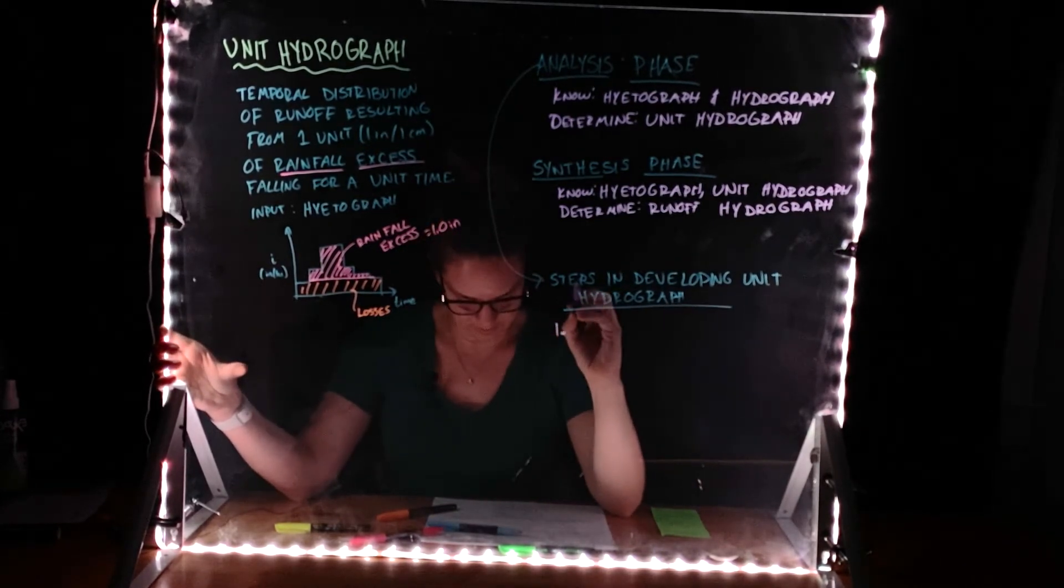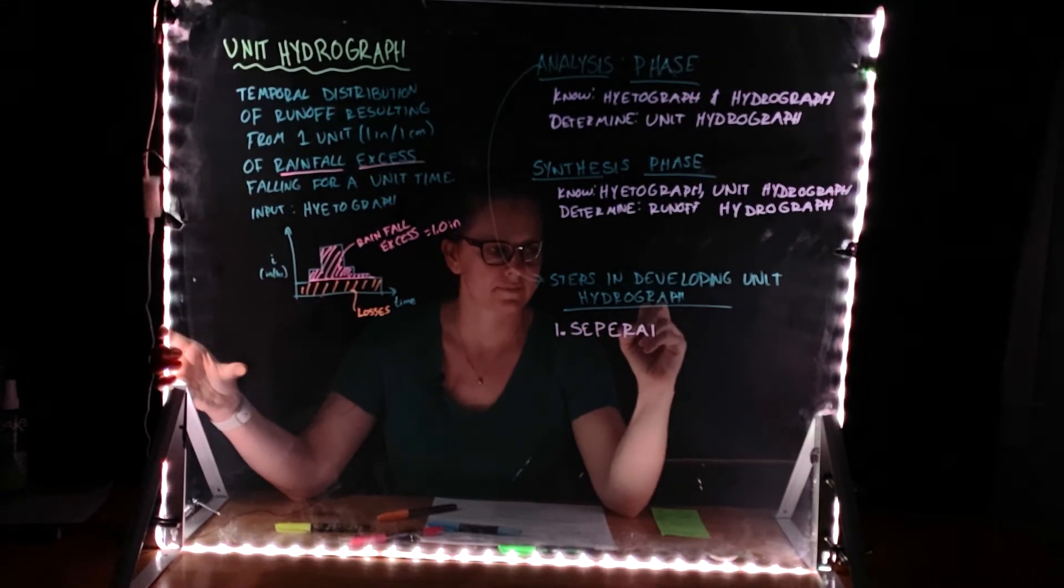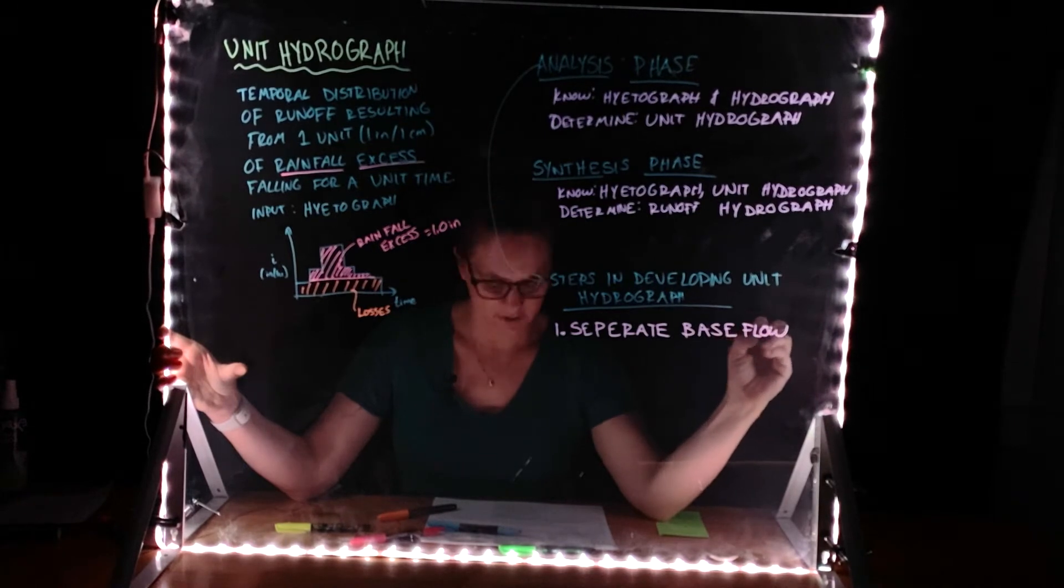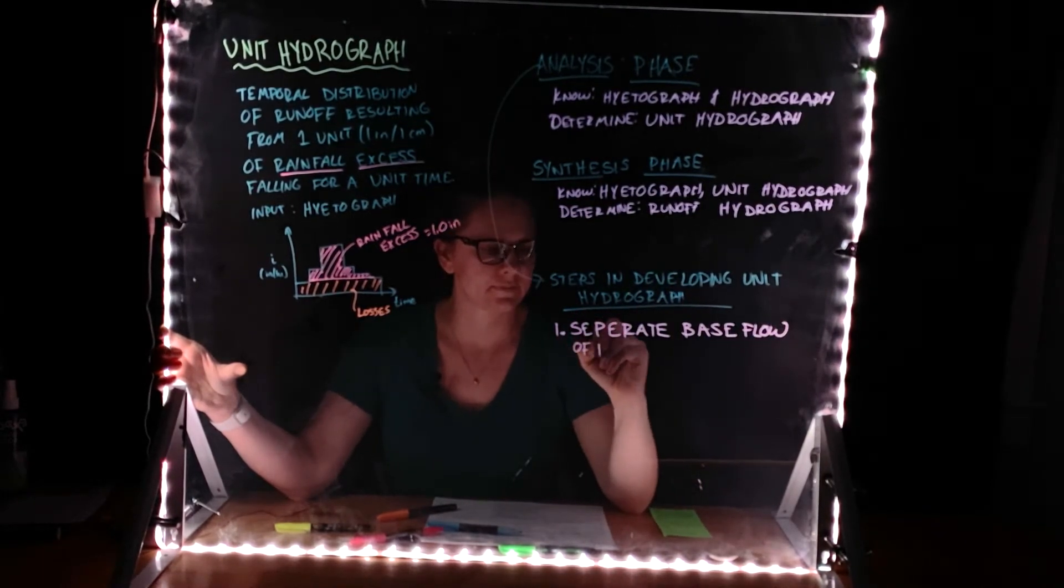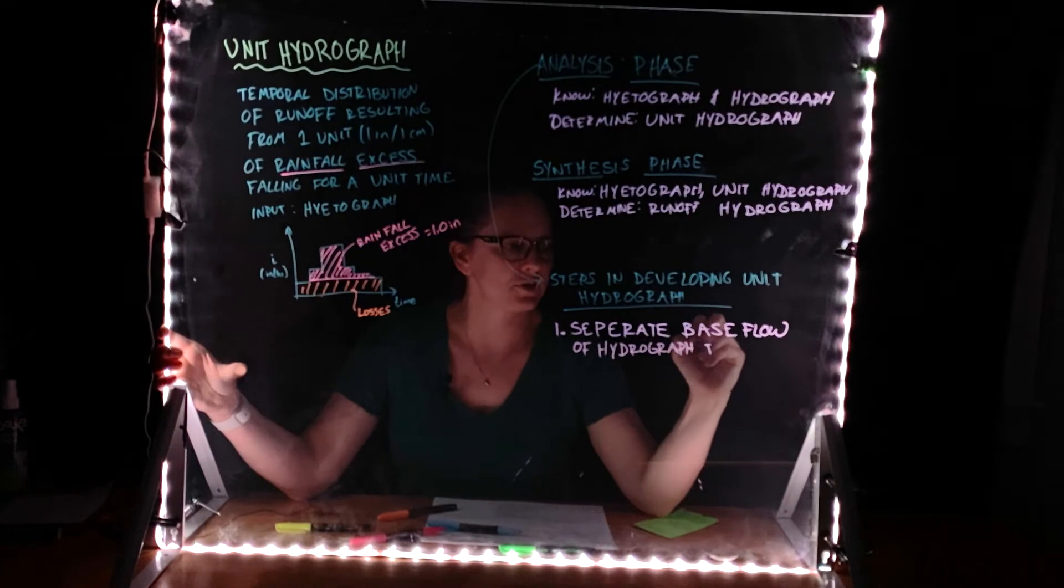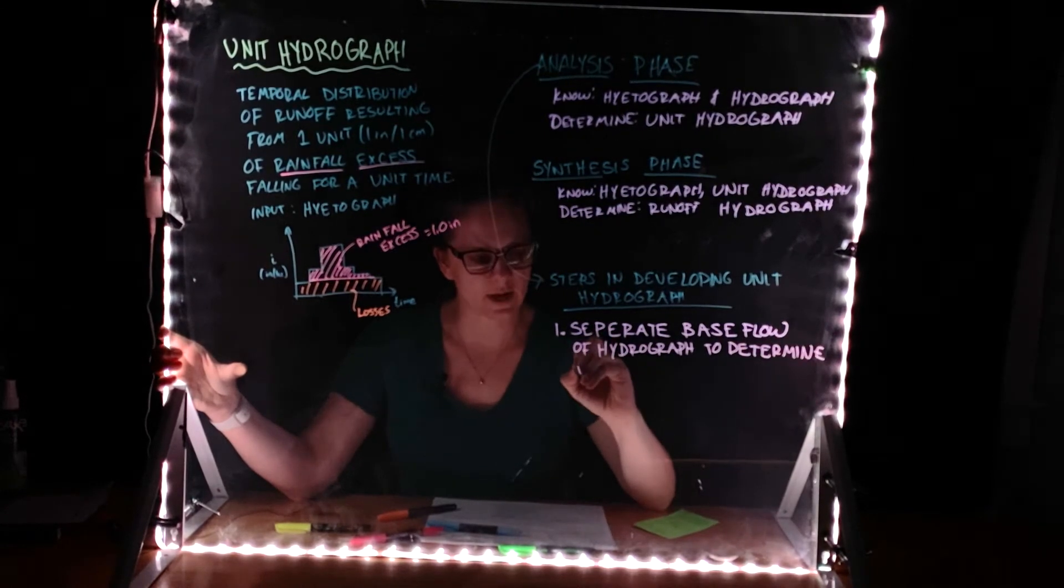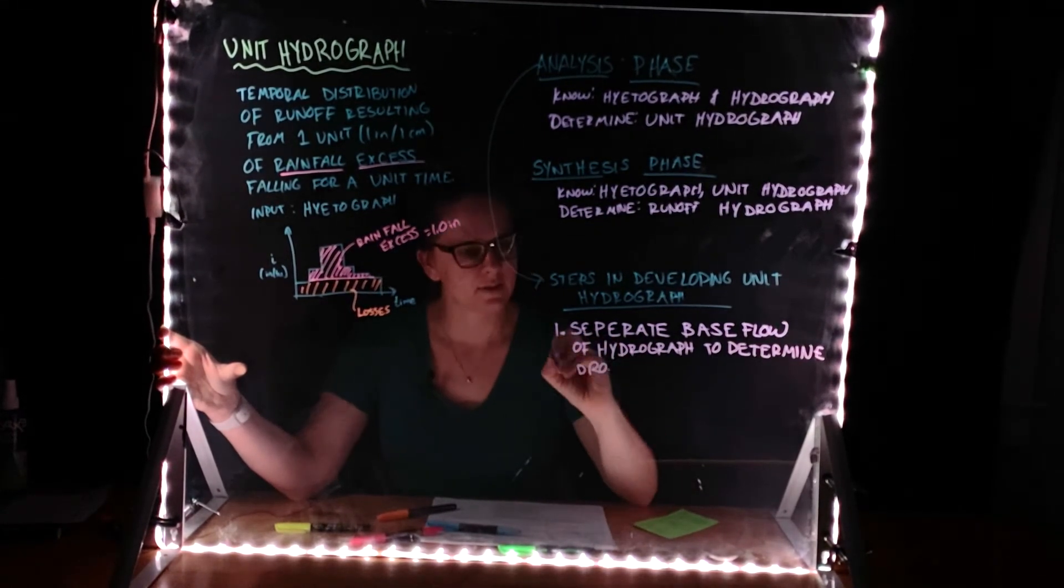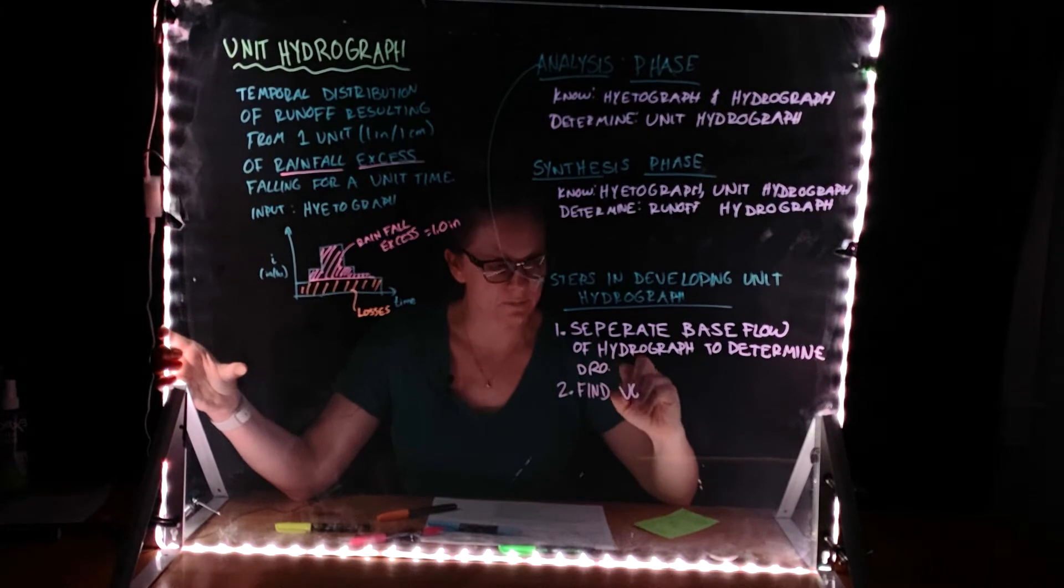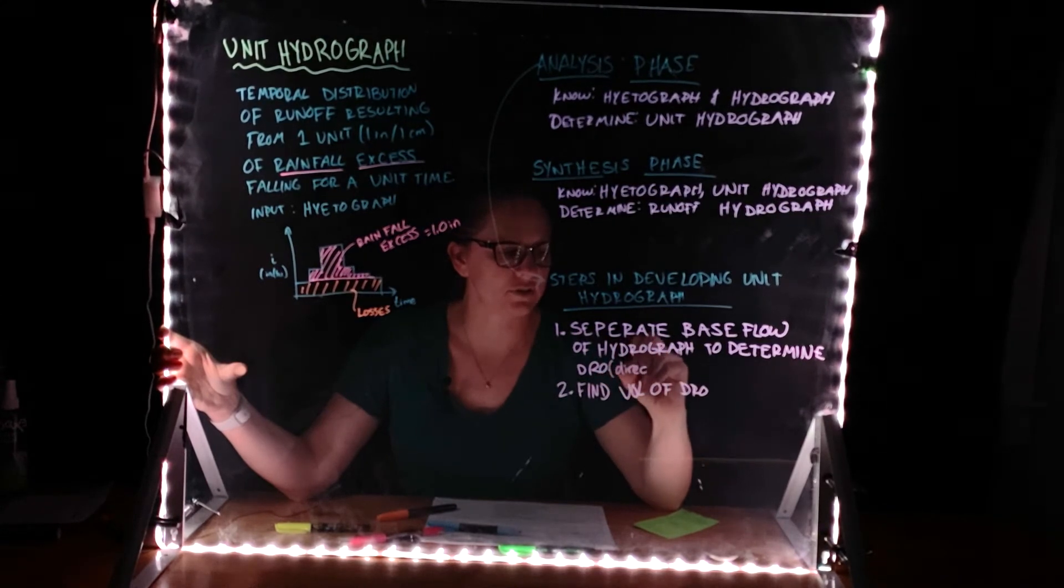Okay, step number one is going to be to separate the base flow of your hydrograph to determine the direct runoff, DRO. The second phase is going to be to find the volume of DRO. Let me just define that. So DRO is direct runoff.